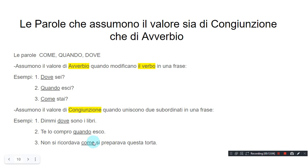Assumono il valore di congiunzione quando uniscono due subordinati in una frase — they are conjunctions when they combine two subordinates in a sentence. Esempi: Dimmi dove sono i libri — Tell me where the books are. Te lo compro quando esco — I will buy it for you when I go out. Non si ricordava come si preparava questa torta — She didn't remember how this cake was being prepared.